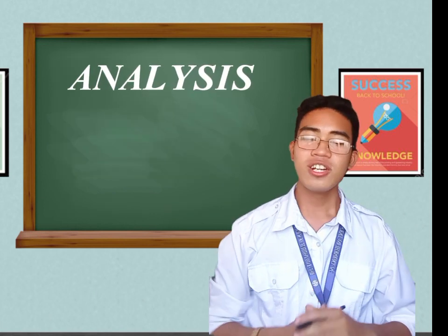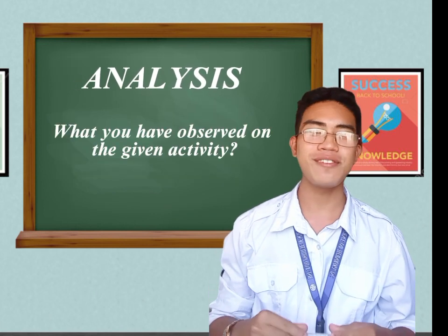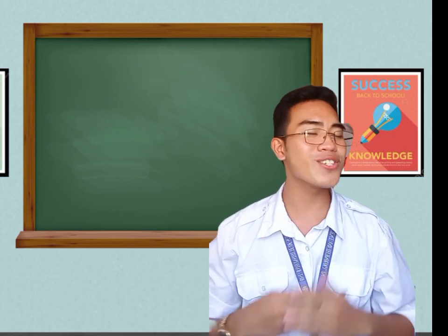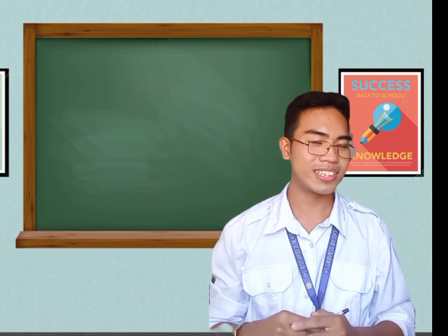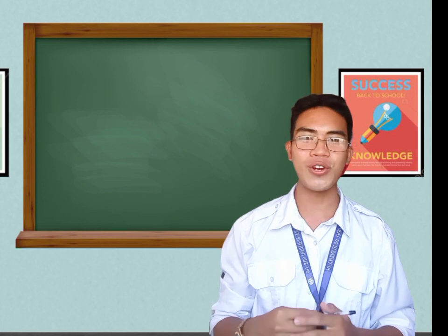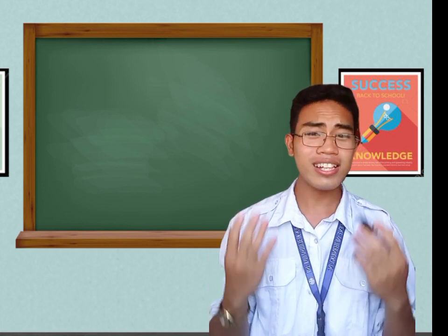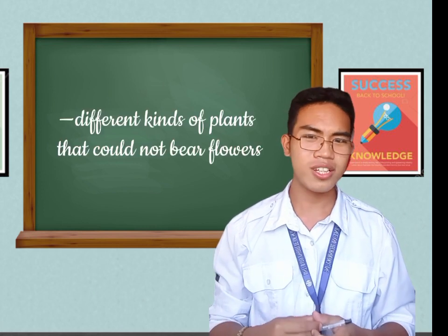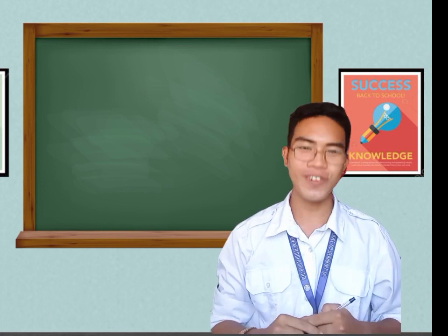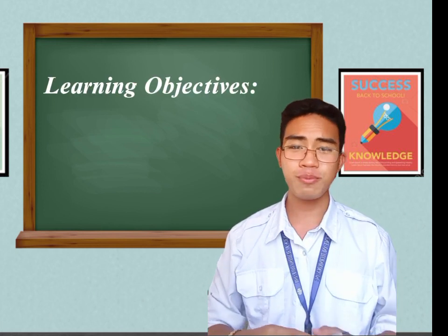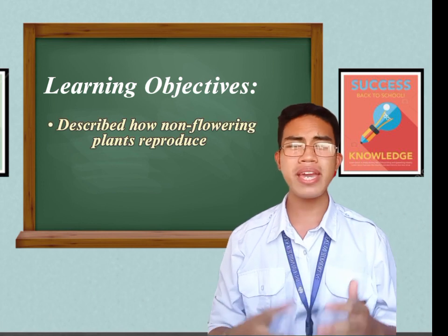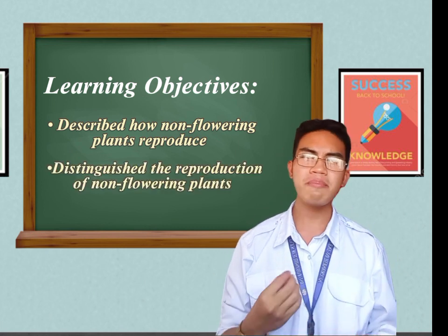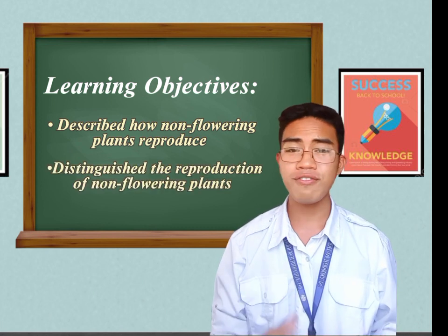Okay, finish. What did you observe in our activity? Yes, Kimberly — very good. In our activity, there are different kinds of plants, plants that could not bear flowers. And apparently you are correct. So our learning objectives for this lesson are: to describe how non-flowering plants reproduce and to distinguish reproduction in non-flowering plants.